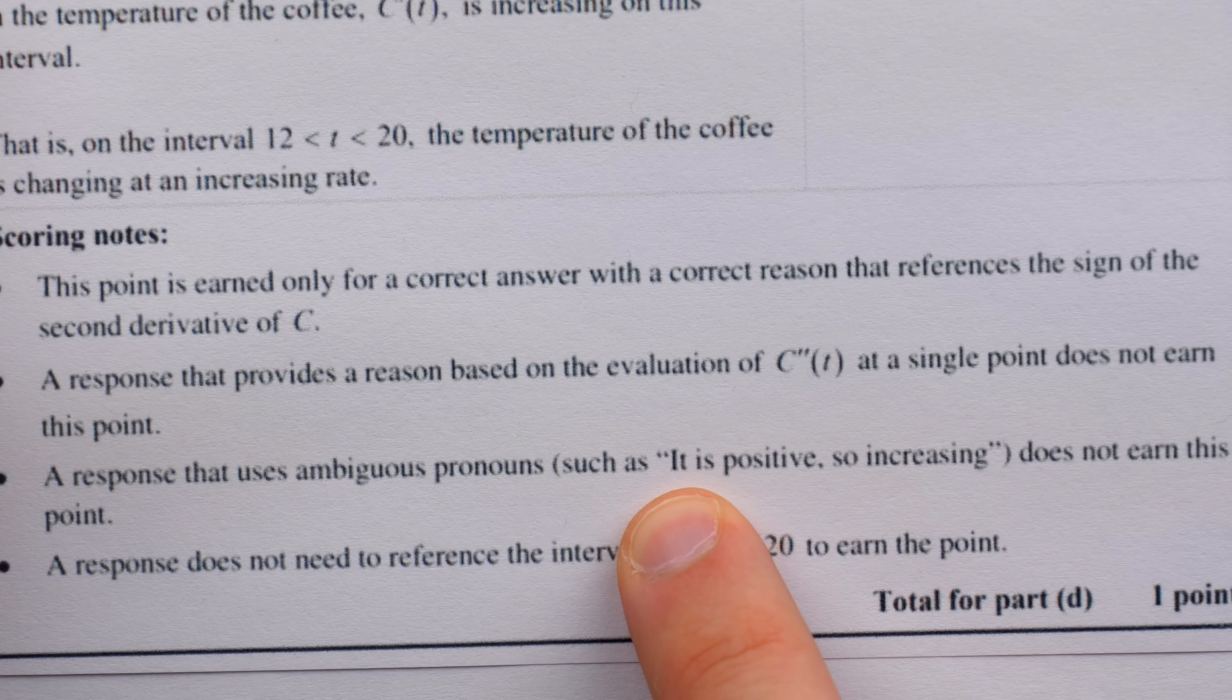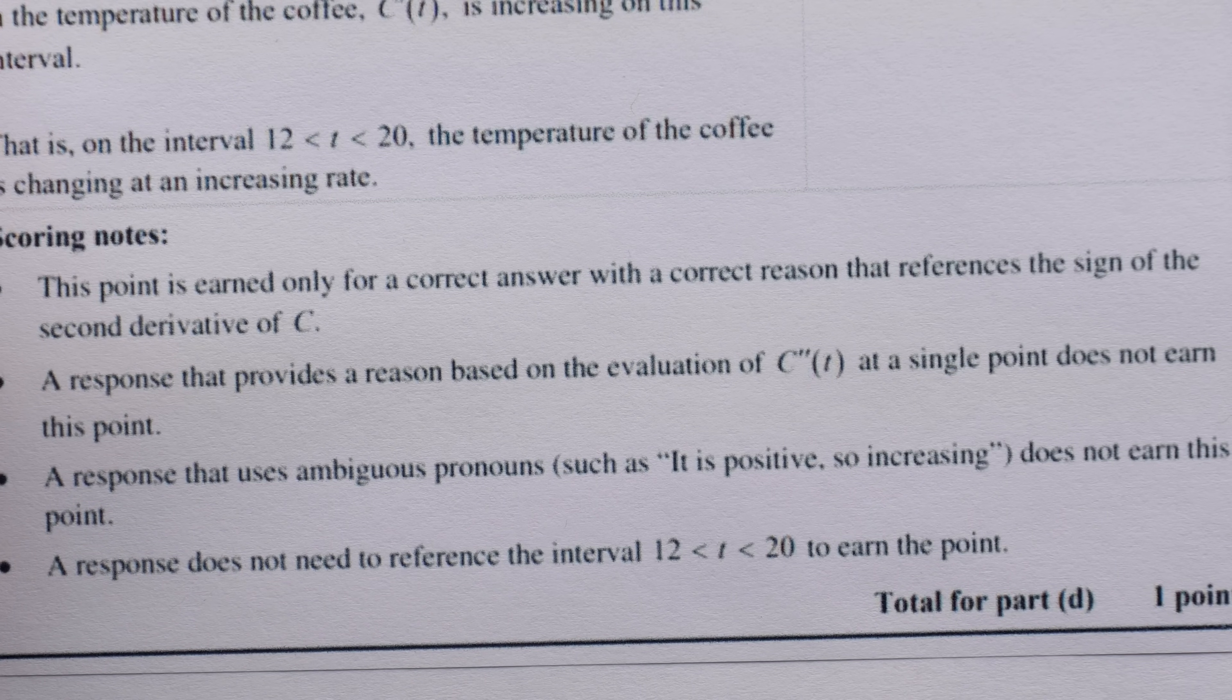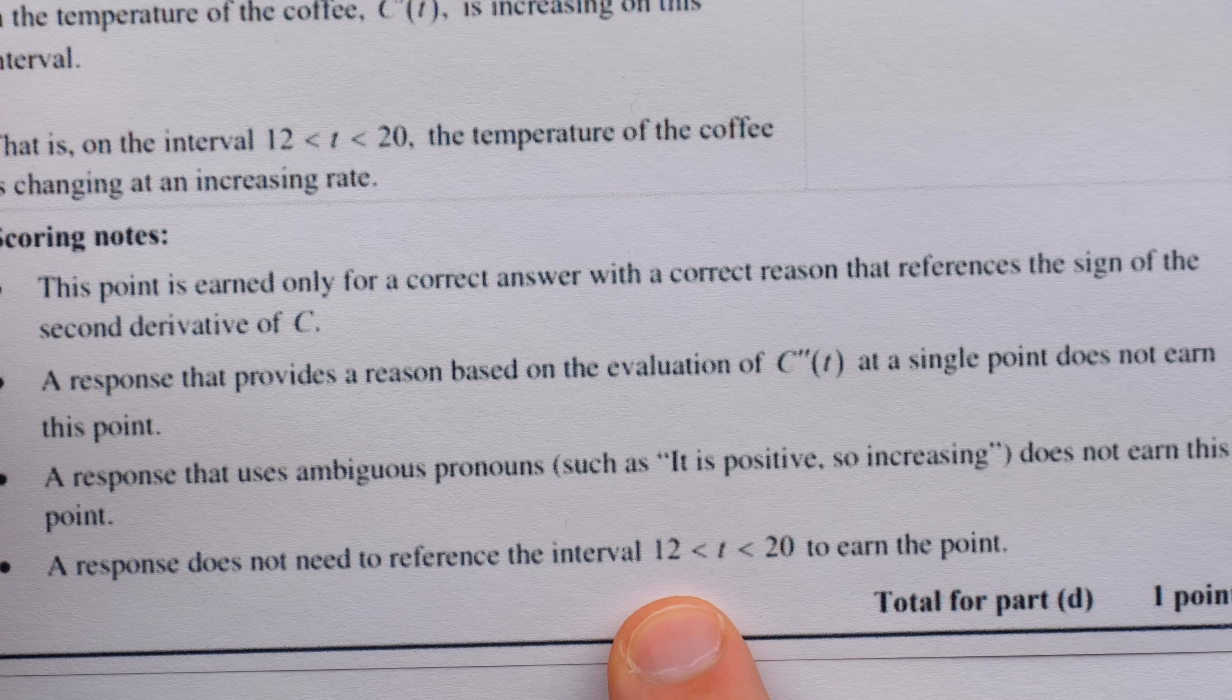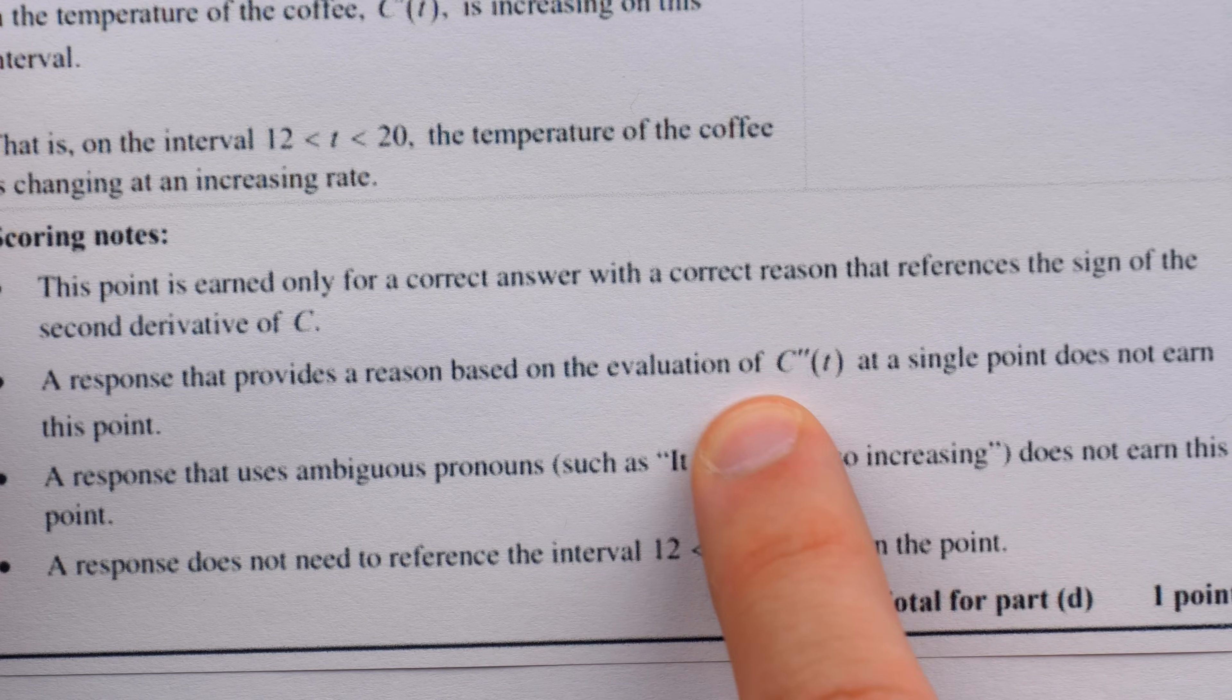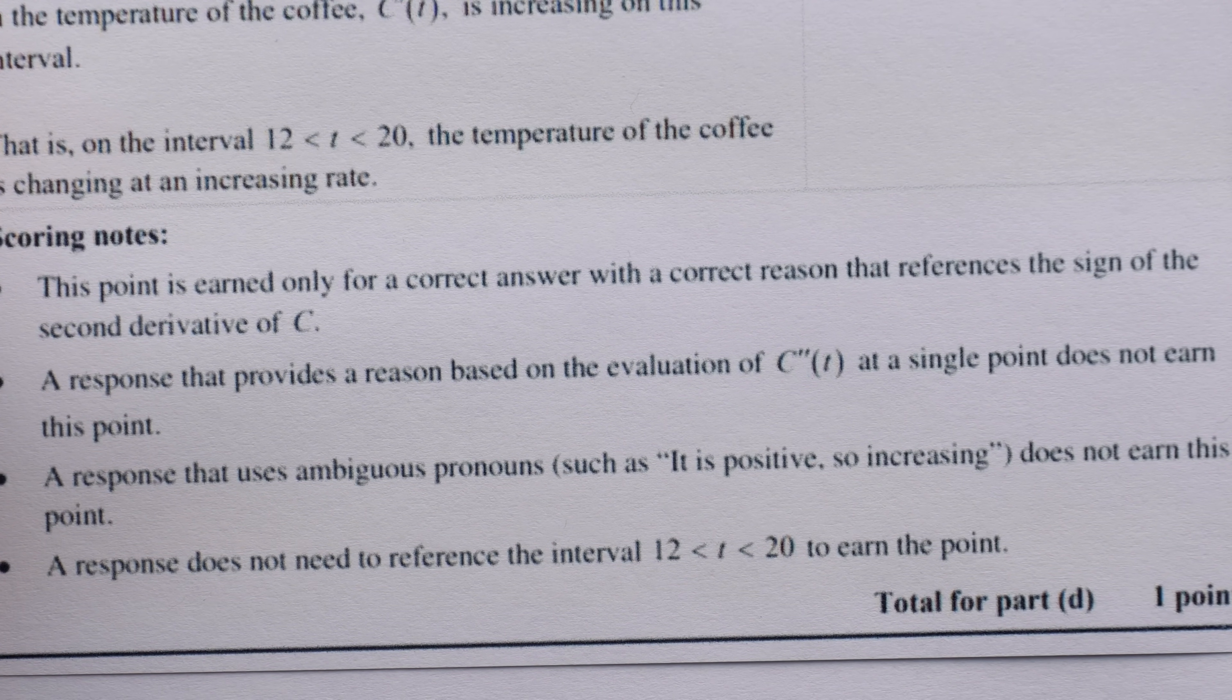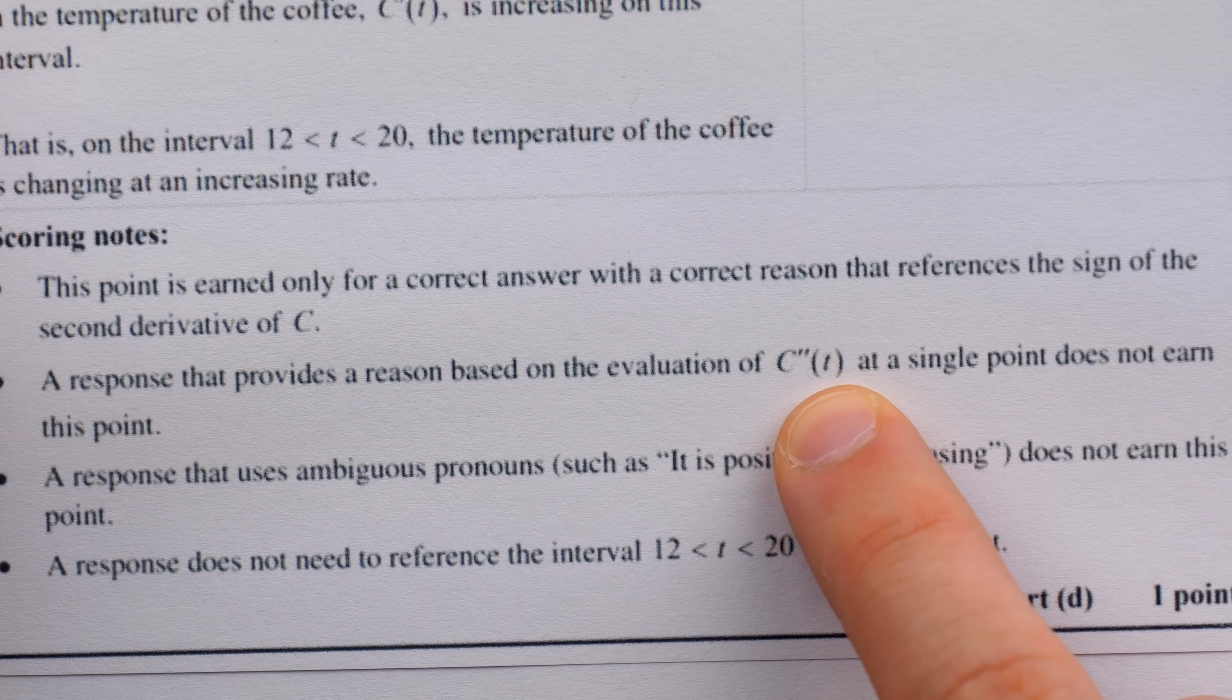Is it the first derivative, the original function, the second derivative? You're not making your reasoning clear if you use an unclear pronoun. And interestingly, even though you can't base your reason on a single point, you don't have to reference the interval from 12 to 20 to earn the point for the question. You just can't use the evaluation of a single point to justify your answer. I suppose the reasoning there is that if you don't reference an interval, well, it's clear we're talking about this one, the interval that was introduced in the question. However, if you base your answer on the evaluation of a single point, that is simply a logical error.